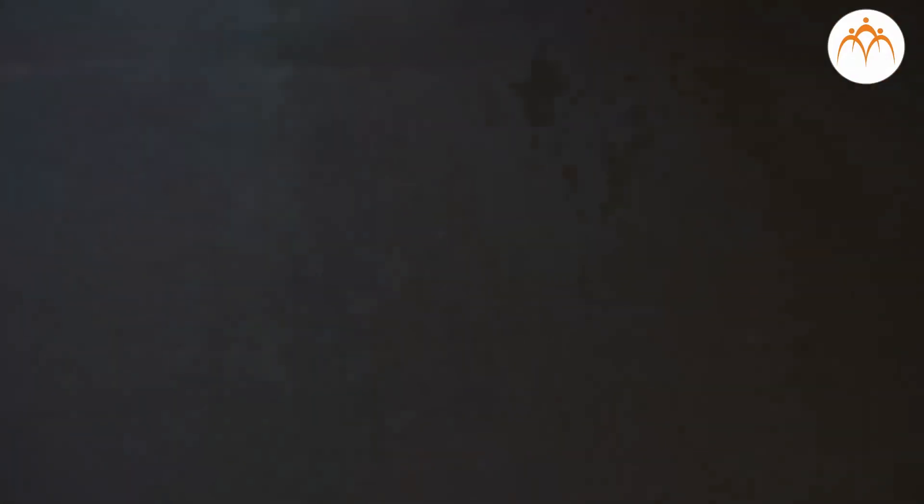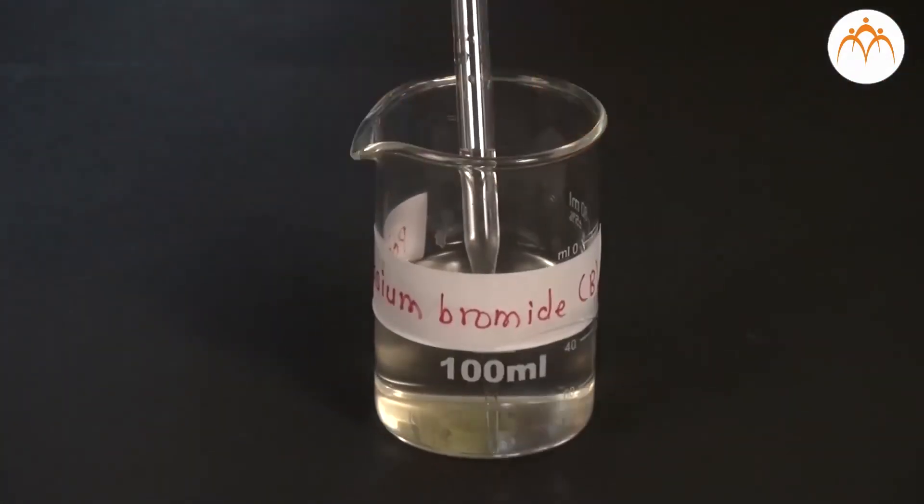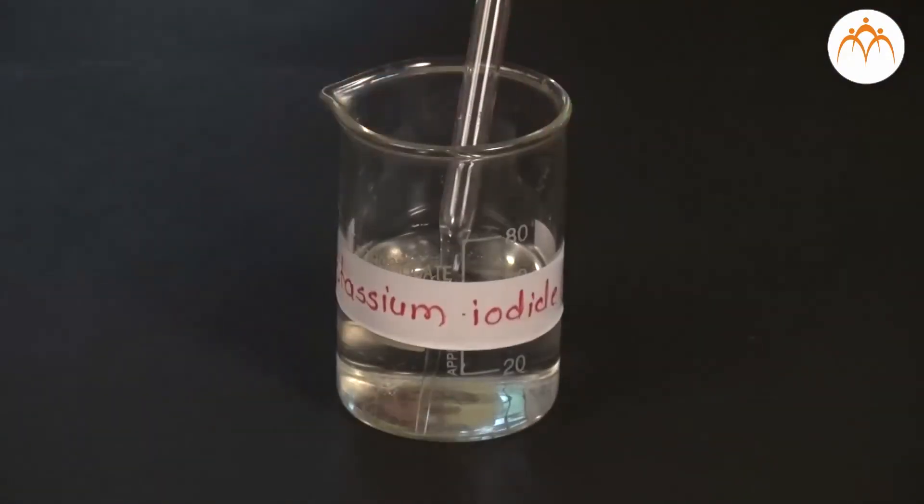Procedure. We keep solutions of potassium chloride, potassium bromide and potassium iodide in three test tubes and label them as A, B and C.